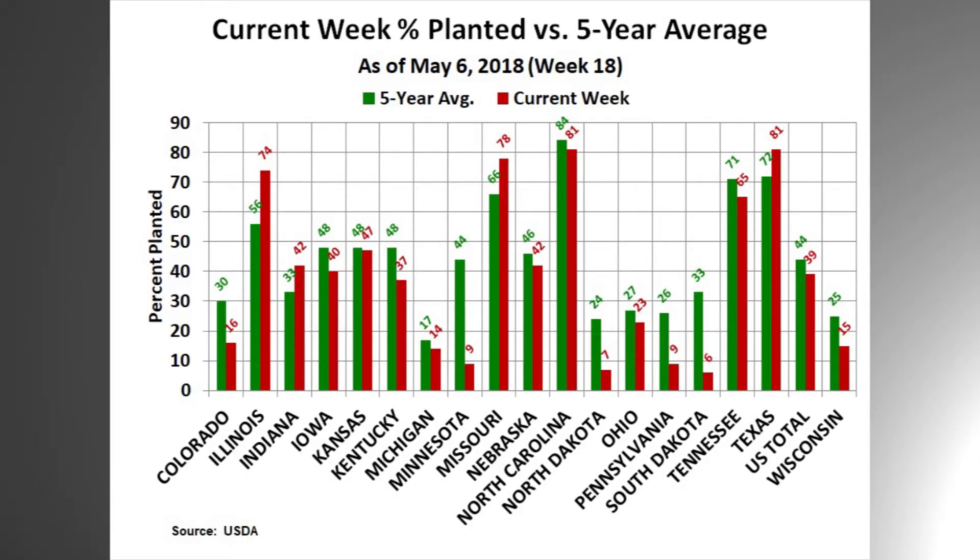For the 18th week of 2018, ending May 6th, corn planting was 39% complete. This is up from 22% the previous week and down from the 5-year average of 41%. When comparing to the 5-year average...